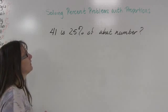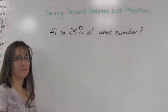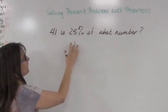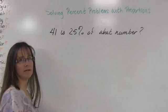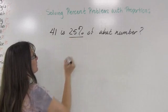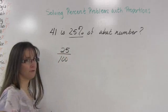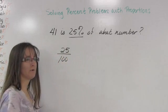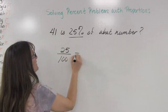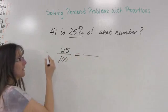Okay, so let's look at setting up a proportion when I'm missing a number instead. Here I have 41 as 25% of what number. Remember that this 25%, of course, can be written as 25 over 100, which gives me my first ratio, my first fraction for my proportion. I will set it equal to.